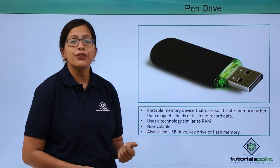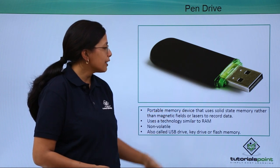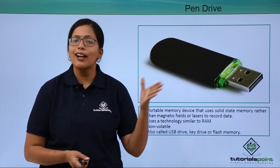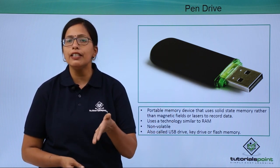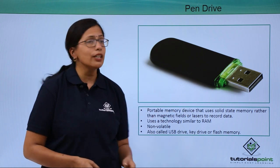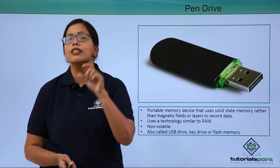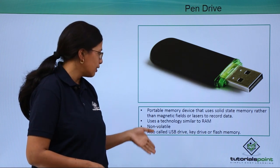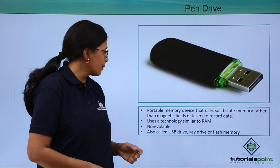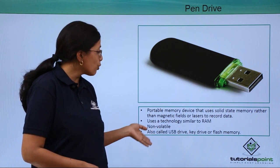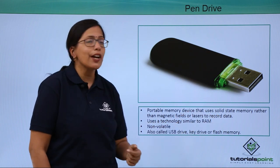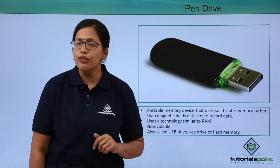Now let's look at the pen drive. It is a portable memory device that uses solid state memory rather than magnetic fields or lasers. Hard disks used magnetic fields; CDs and DVDs used optical rays; but the pen drive uses solid state memory — meaning it uses semiconductor chips inside it. It uses a technology similar to RAM, since RAM is also made up of silicon chips. It is non-volatile and is also called USB drive, key drive, or flash memory, because it connects through the USB port of your CPU.